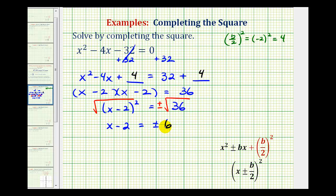So to solve for x, the last step is to add 2 to both sides of the equation. So we have x equals, this would be 2 plus or minus 6.